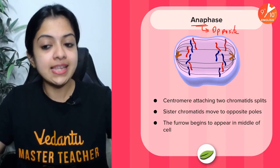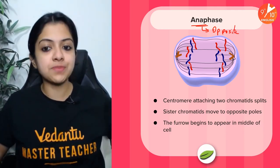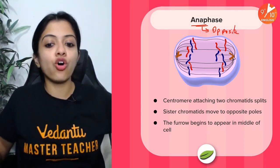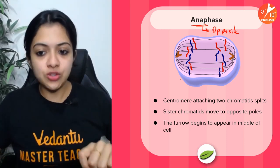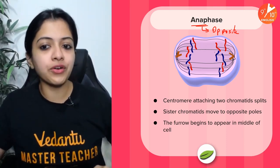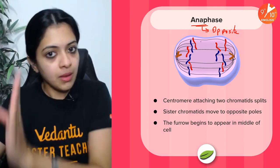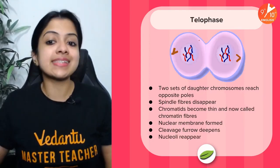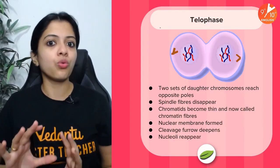Then comes anaphase — 'ana' means opposite. The sister chromatids are pulled apart to opposite poles by shortening of the spindle fibers. As you can see, a tiny furrow begins to form at the middle of the cell during anaphase.